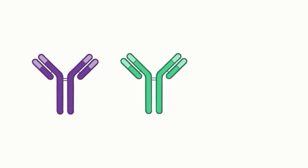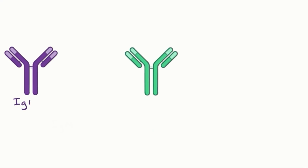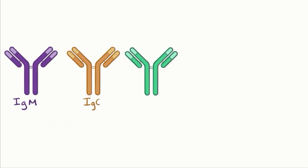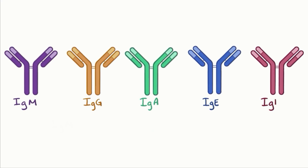There are five classes of antibodies in total: IgM, IgG, IgA, IgE, and IgD class antibodies, and each one has a slightly different job.